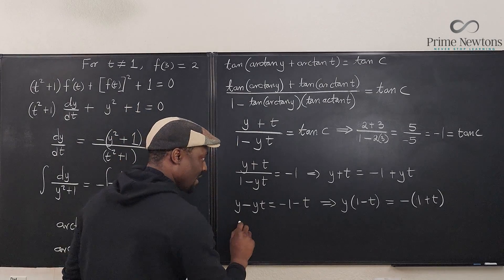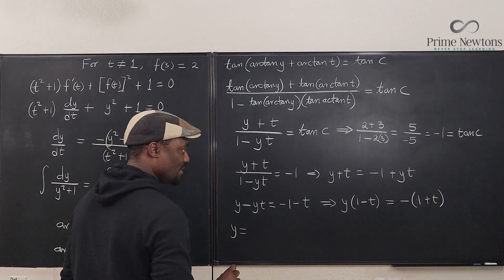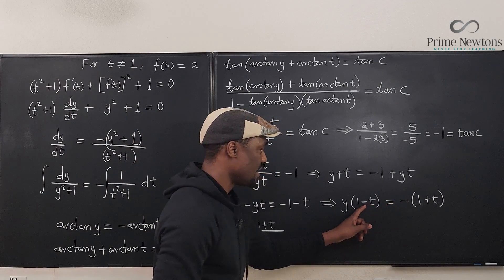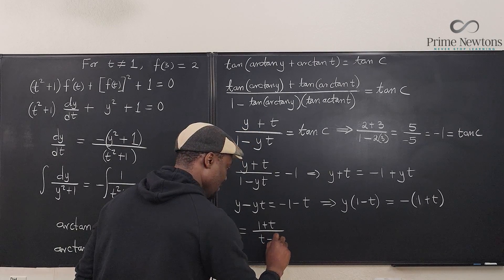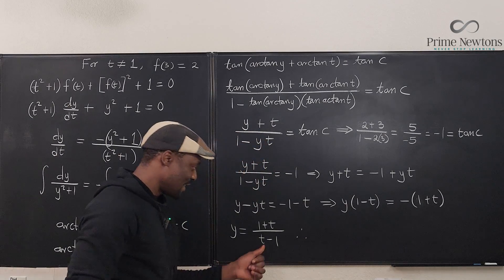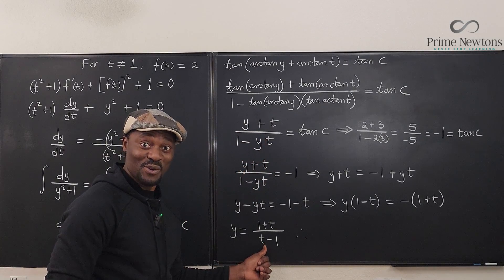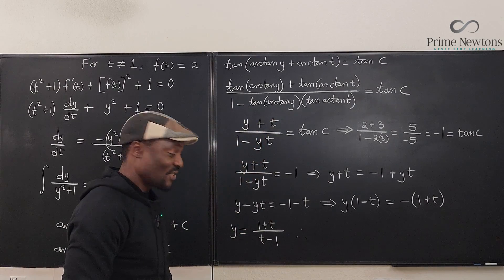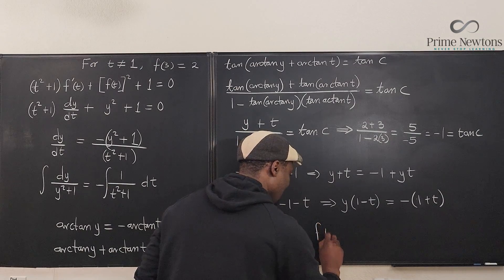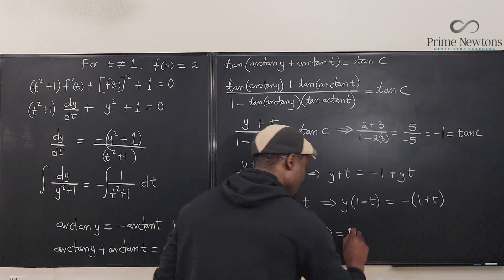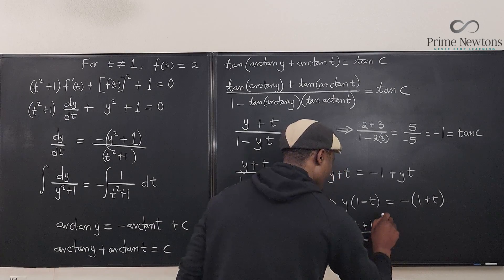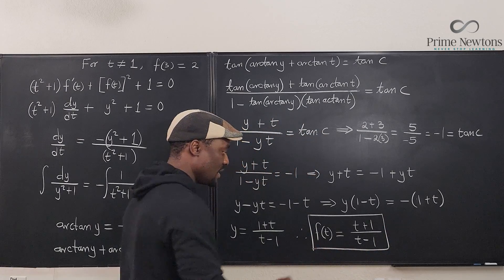Therefore y = (1 + t) / (1 − t) · (−1/−1) = (t + 1) / (t − 1). This is our final answer — and this is exactly why they told you t ≠ 1 from the beginning, so that the function is defined. So f(t) = (t + 1) / (t − 1).